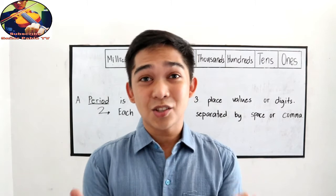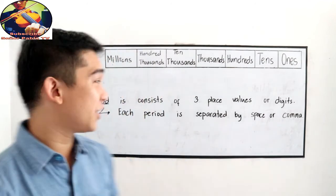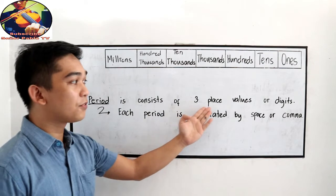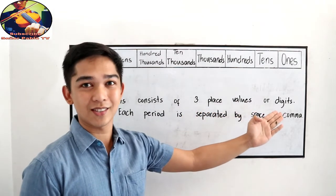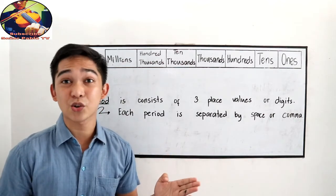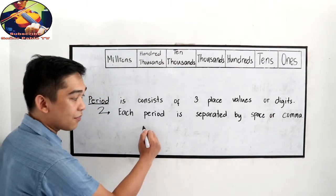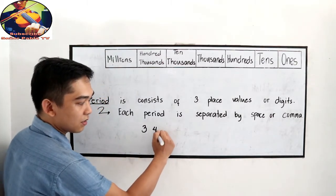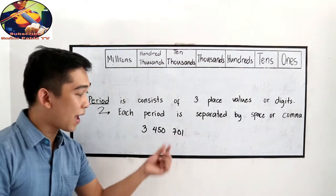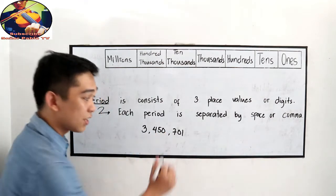Did you know that our digits are grouped into periods? Yeah. A period, by definition, a period is consist of 3 place values or digits. And each period is separated by space or comma. That's why if we're going to write digits, let's say we have 3. It is separated by a space or a comma. So it is by 3.